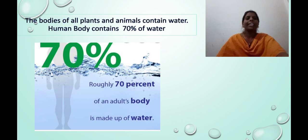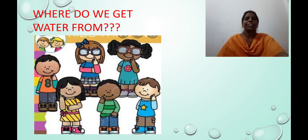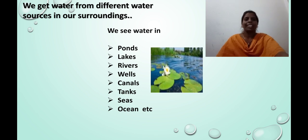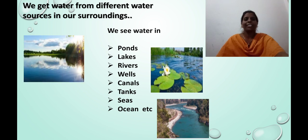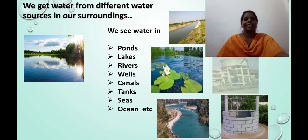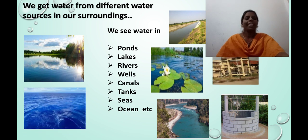The human body contains 70% of water. Do you know where do we get water from? We get water from different water sources in our surroundings. We see water in ponds, lakes, rivers, wells, canals, tanks, seas, oceans, etc.